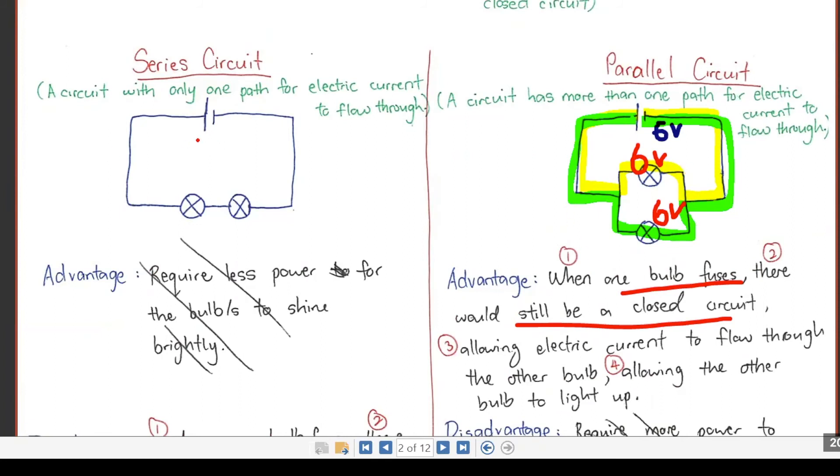But for the series one, how does it work? Six volts. Do I need to share now? Yes. That is the difference because only one path. So I have to share within two bulbs. So that's why it's three, three. In a series you must share three, three. That's why it's dimmer.